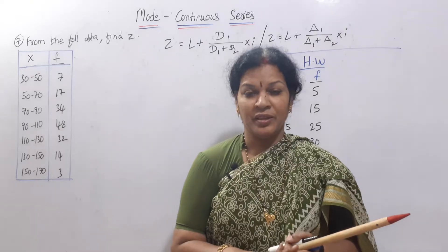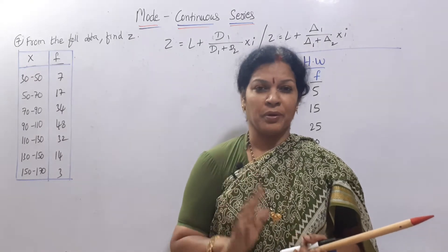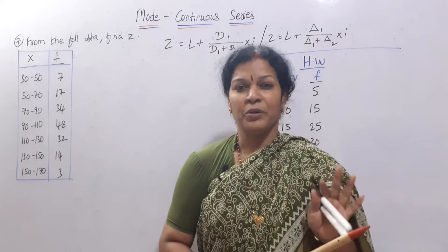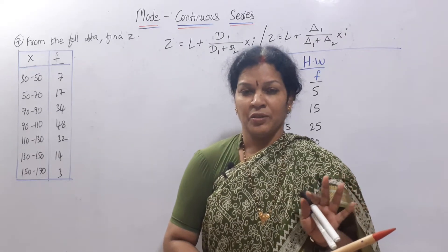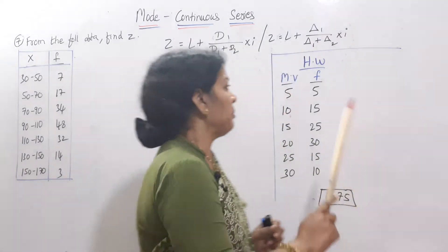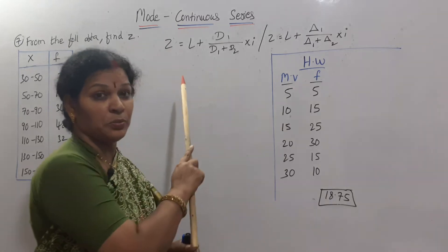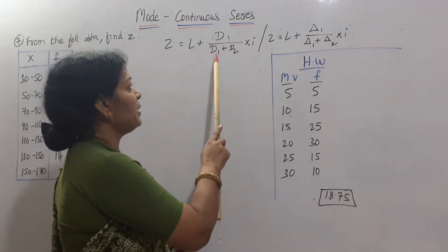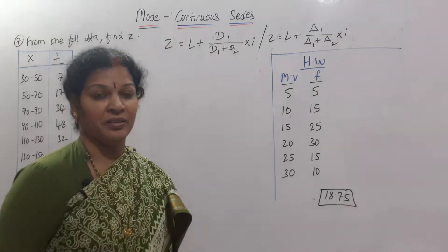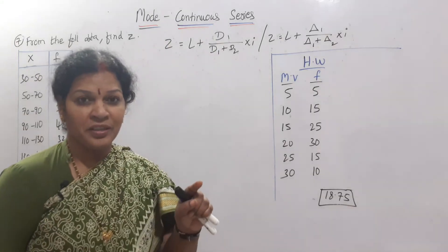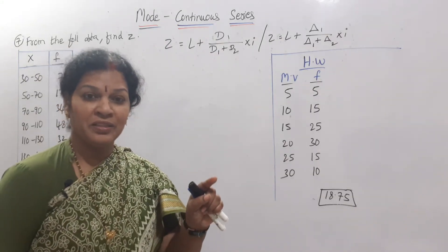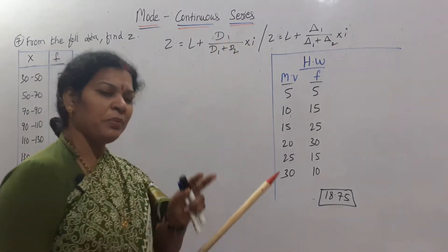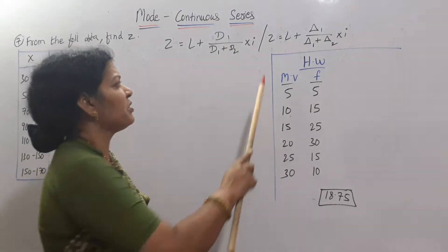Today we will work out a simple problem on continuous series. The formula to remember is: Z (mode) = L + (d1 / (d1 + d2)) × i. This is the formula for mode in continuous series.